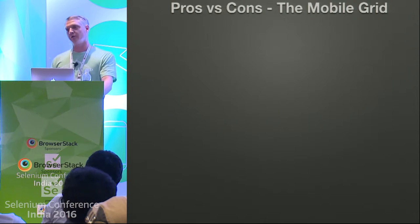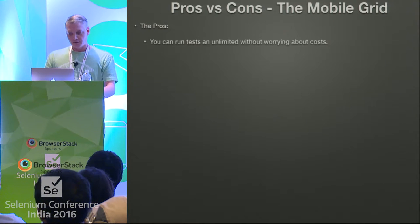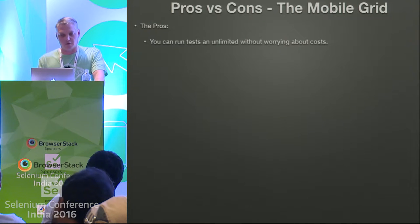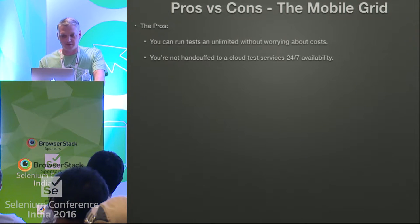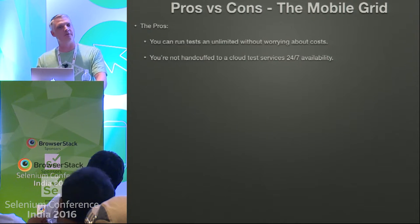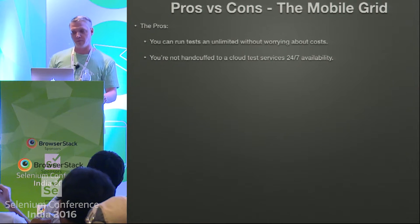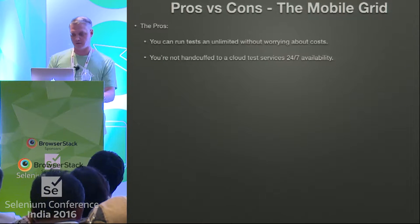So the grid — if you're going to do this yourself, we'll go through the pros and cons. The pros: you can run it unlimited and don't have to worry about cost, it's all local. You're also not handcuffed to the test service's 24/7 availability. If their service is down and you're trying to make a build, but your tests can't run, you're stuck. Running locally eliminates that.